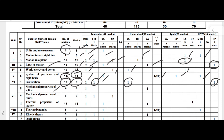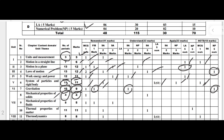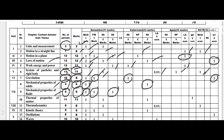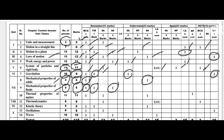Next is Mechanical Properties of Solids — four teaching hours and four marks. This four marks is divided into two sections: one MCQ and one short answer carrying three marks, totalling four marks. Next, Mechanical Properties of Fluids — five teaching hours and five marks: one MCQ, one fill-in-the-blank, and one three-mark type question, totalling five marks.